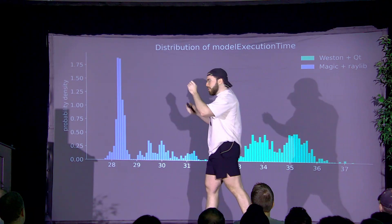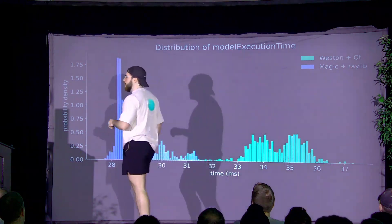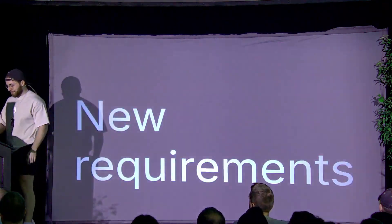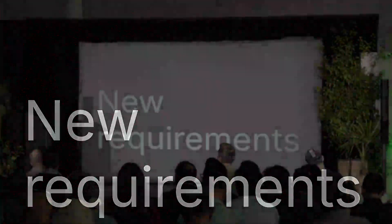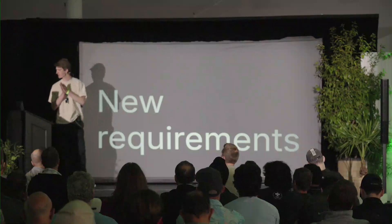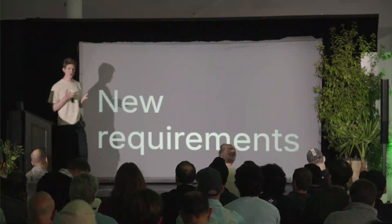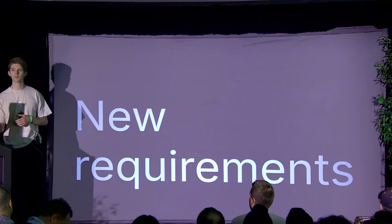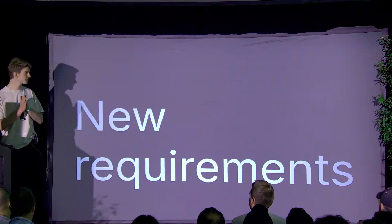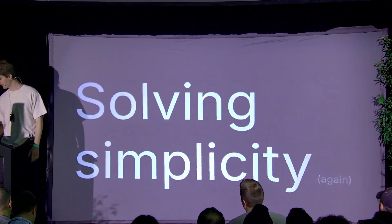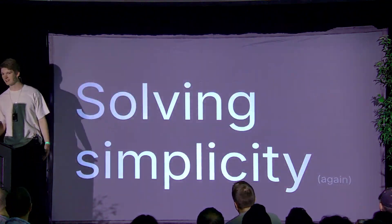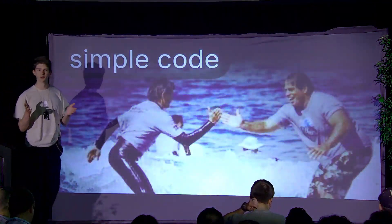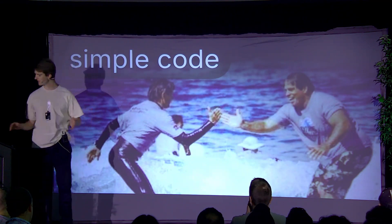Now I'll leave Shane to go on stage and talk to you more about simple stuff again. How's it going guys? It was a great talk by Maxime about the low-level graphics stack and how we simplified that. I'm going to expand on that more on the Raylib part — how we turned things around. So let's start: solving simplicity again. If you have simple code, this goes both ways — you can have a nice simple life.